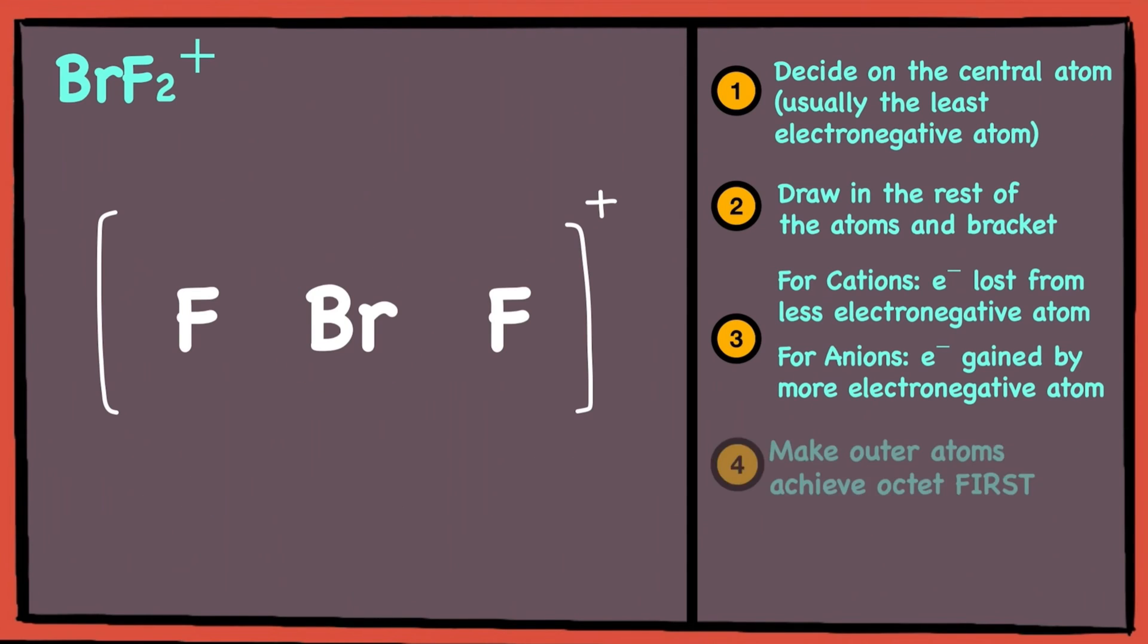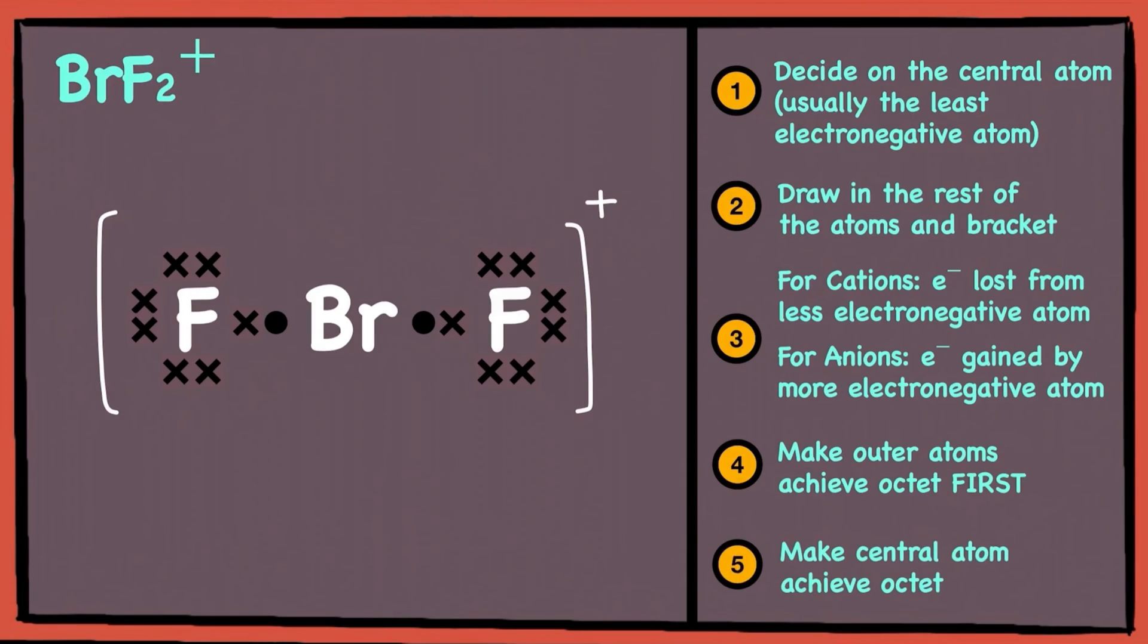With that in mind, let's go on to make the outer fluorine atoms to achieve octet first. As fluorine has 7 valence electrons, we will expect fluorine to contribute 1 electron, and also bromine to contribute 1 electron so that covalent bonding can occur. Now, let's make the central atom achieve octet.